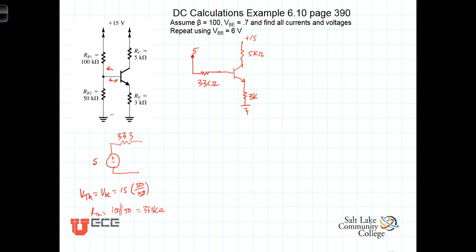Now we're going to assume for calculation purposes that the base to emitter voltage, the DC base to emitter voltage VBE, is going to be 0.7 volts, and a beta of 100.